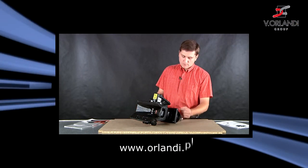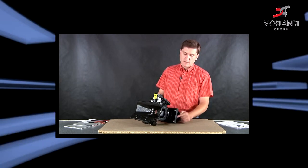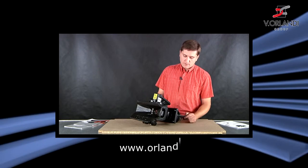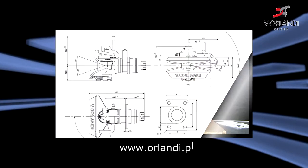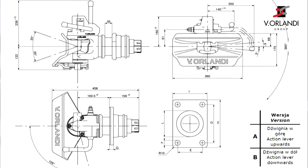Drugim elementem bardzo istotnym jest rozstaw otworów mocujących we flanszy. Rozstaw otworów akurat w tym sprzęgu to 100 mm na 160 mm. Jest to najbardziej popularny rozmiar.